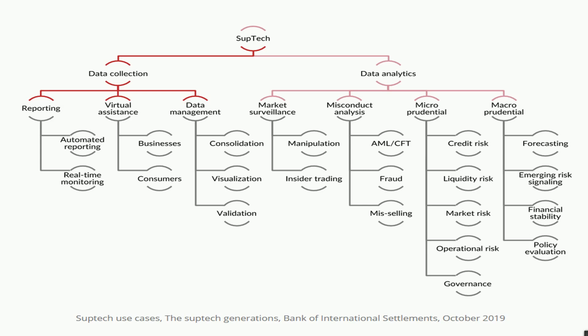In data analytics there are four verticals: market surveillance, misconduct analysis, microprudential, and macro potentials. In market surveillance, the regulator checks whether there has been any data manipulation. SUPTECH service providers can automatically highlight potential manipulation and also identify insider trading — where someone inside an organization trades or shares private information that could influence the share value of that organization.